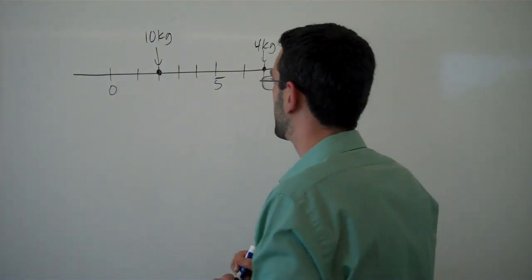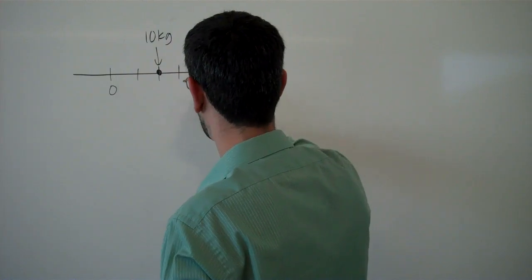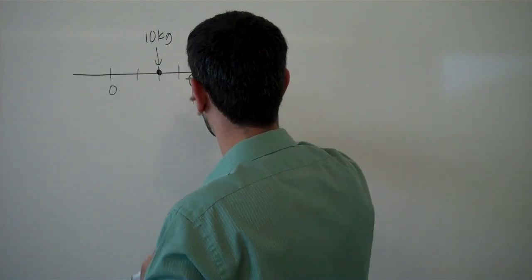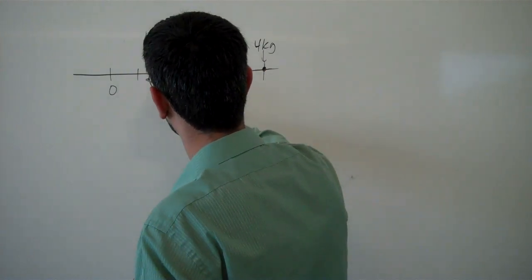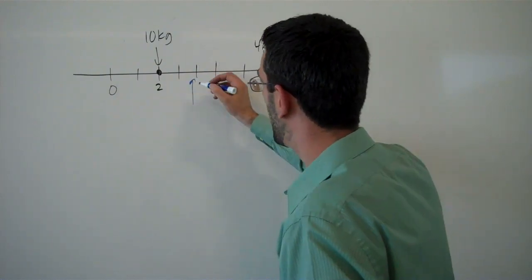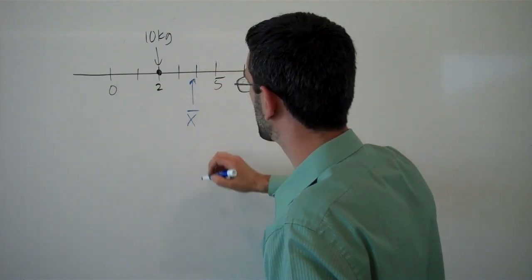It turns out that wherever that center of mass is, this is an x value of 2, that's an x value of 7 there, wherever that point is, we'll call it x̄.